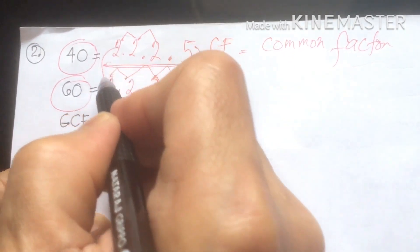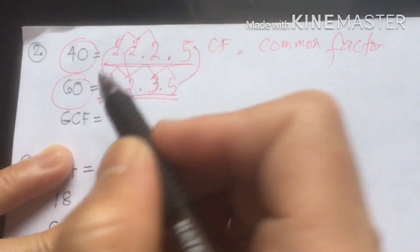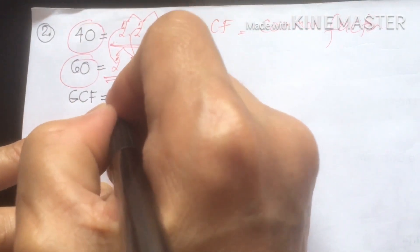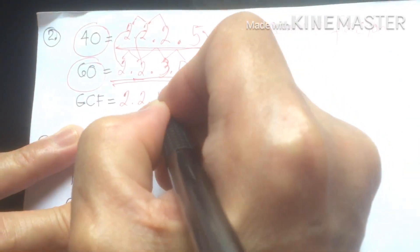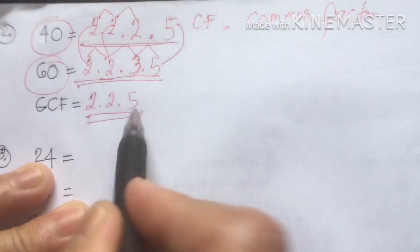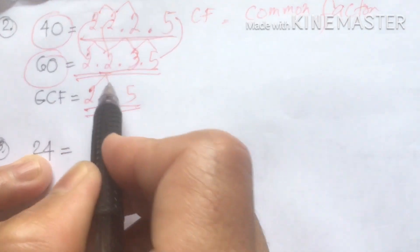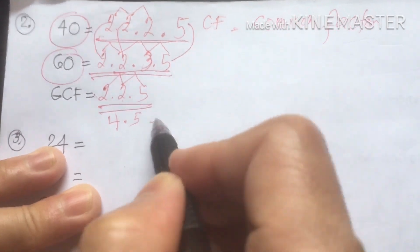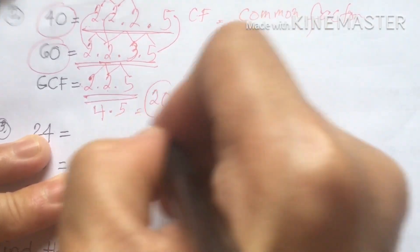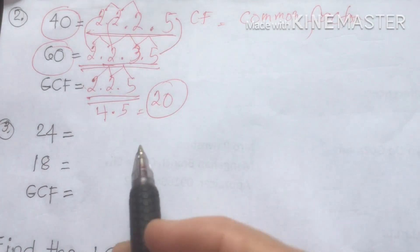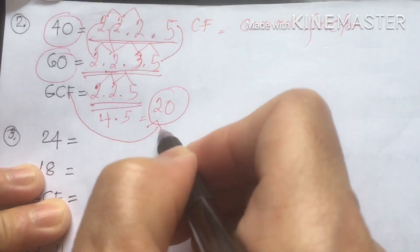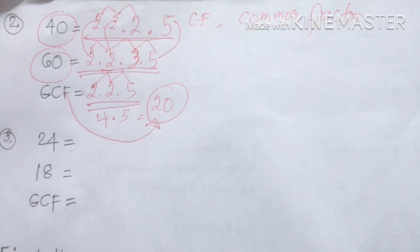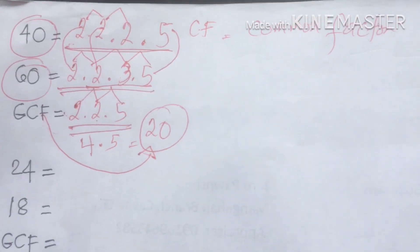The common factors are two 2s and one 5. Next, multiply: 2 × 2 × 5 — two times two is four, times five gives us 20. That is our GCF, or Greatest Common Factor, of 40 and 60.